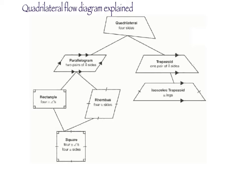The diagram you see here gives you a lot of information about quadrilaterals, or four-sided figures — not just the properties of different types of quadrilaterals, such as a trapezoid or a rhombus, but also the relationships to each other.